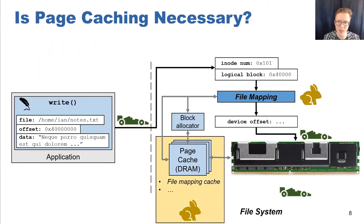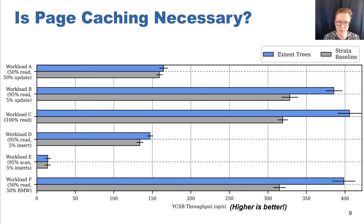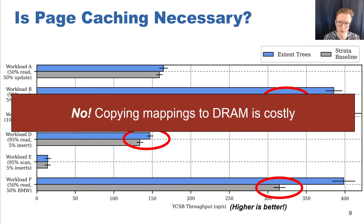We first analyze whether or not the page cache is necessary for file mapping structures, because it imposes constraints on what designs we consider. If we need to use a page cache, we end up treating persistent memory essentially as a block device. However, if we don't need the page cache, we can explore structures which leverage the byte-addressable nature of persistent memory with more random access properties. We compare the throughput of page-cached extent trees to extent trees which bypass the page cache and operate directly on persistent memory, across six different YCSB workloads on LevelDB. The results clearly indicate that the page cache is detrimental to file mapping performance. For workloads B, C, D, and F, which are bottlenecked on the file system IO path, page-cached extent trees perform worse, because the software overhead of maintaining the cache outweighs the benefits of DRAM caching, since DRAM is only slightly faster than persistent memory itself.